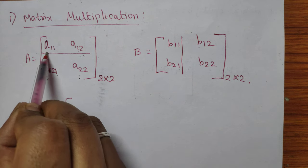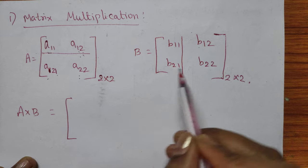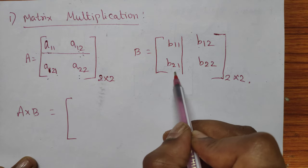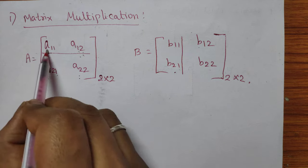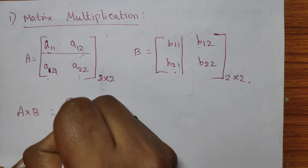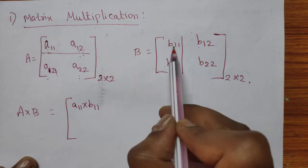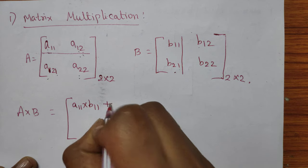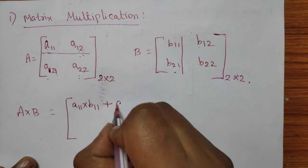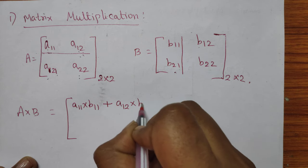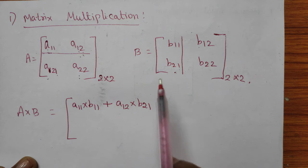The first row of A has A11 and A12. The first column of B has B11 and B21. We have to multiply between these two. So the result is A11 into B11 plus A12 into B21. This gives the first row and first column element.